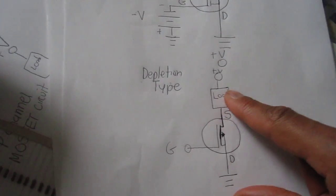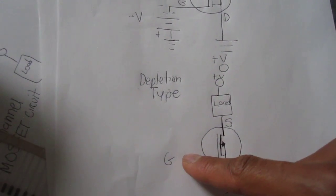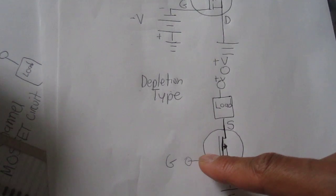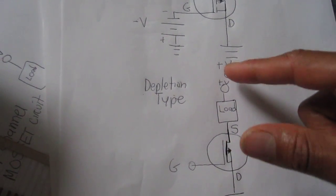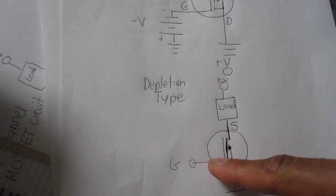A depletion type MOSFET is the opposite. Without voltage to the gate terminal, it's fully conducting, and when you apply voltage to the gate terminal,